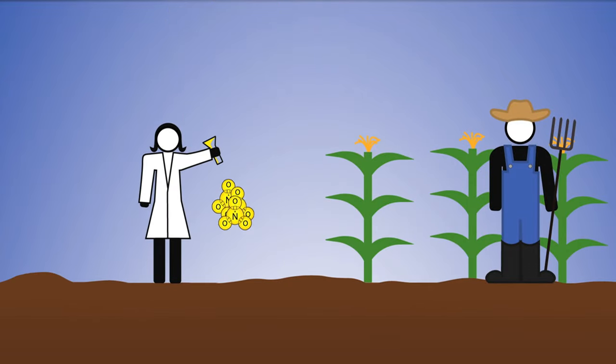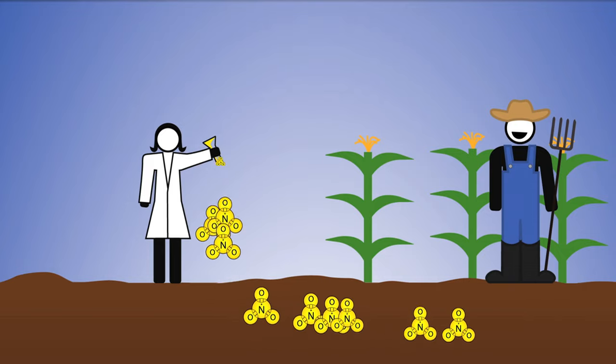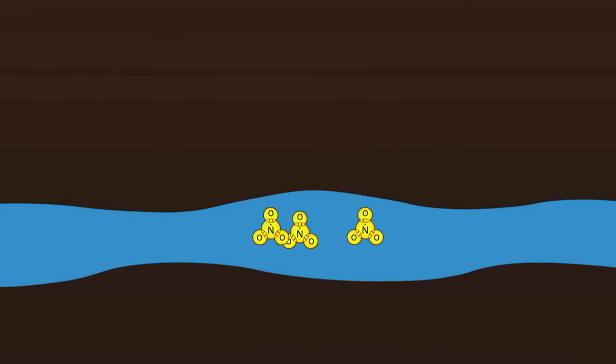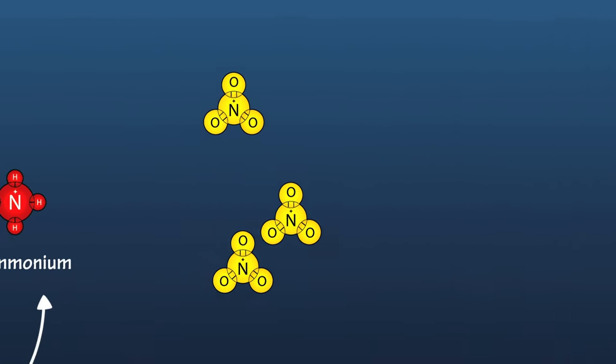Chemists have developed fertilizers, which fix unusable nitrogen into a usable version, which is good for farmers, but not if they use too much. This leftover fertilizer gets swept into groundwater, lakes, and rivers, and eventually makes its way to the ocean.